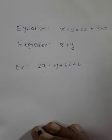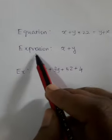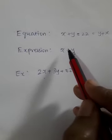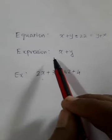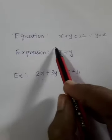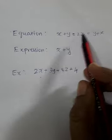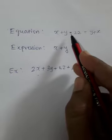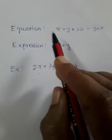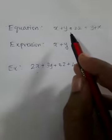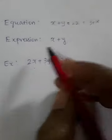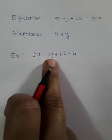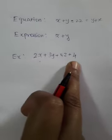Just a recap about expression and equation. Expression is when you write two terms with basic operations like plus and minus. Equation is when you equate an expression to any number or another expression. Simply remember: if you have an equal-to sign, it is called an equation; without an equal-to sign, it is called an expression. An example of one algebraic expression is 2x plus 3y plus 5z plus 4.